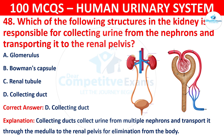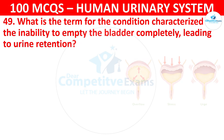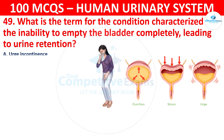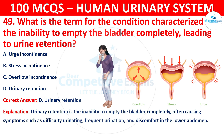Question 49: What is the term for the condition characterized by the inability to empty the bladder completely, leading to urine retention? The options are: urge incontinence, stress incontinence, overflow incontinence, or urinary retention. The correct answer is D, that is urinary retention. Urinary retention is the inability to empty the bladder completely, often causing symptoms such as difficulty urinating, frequent urination, and discomfort in the lower abdomen.